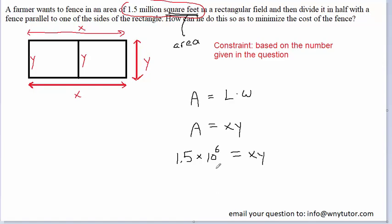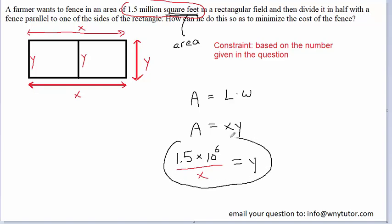Typically, what you want to do with your constraint equation is solve it for y. In order to solve this constraint equation for y, we can divide both sides by x, and the x's on the right-hand side cancel out. We'll take this result and set it off to the side to refer back to shortly.